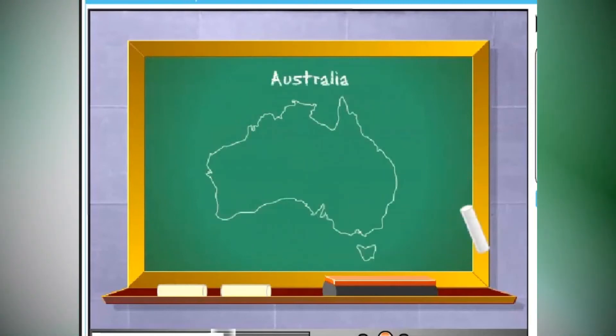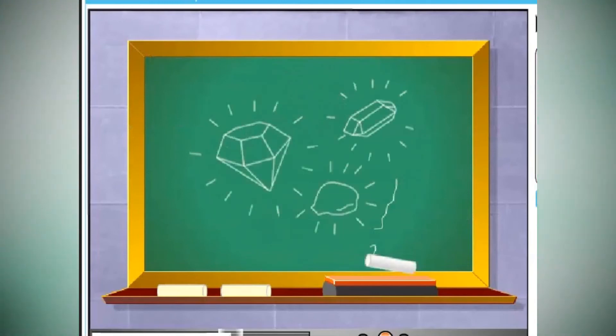Australians use the land in a number of ways, including mining for coal, diamonds, gold, and other minerals.